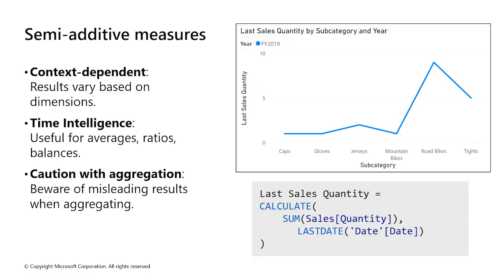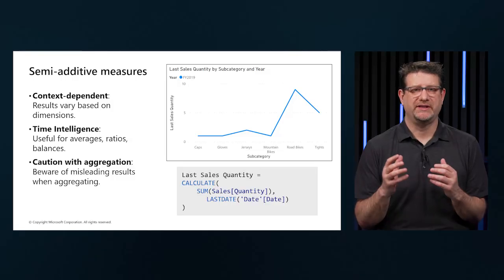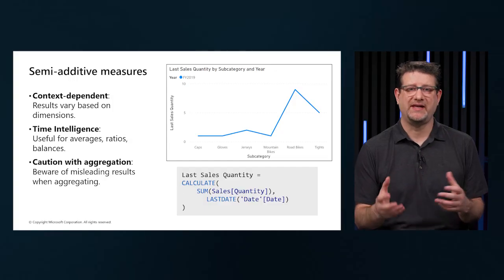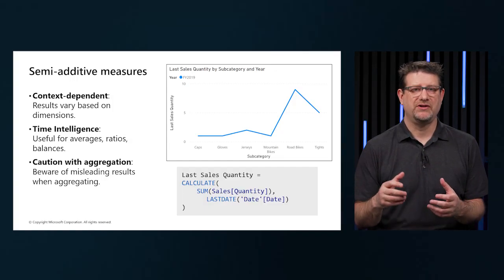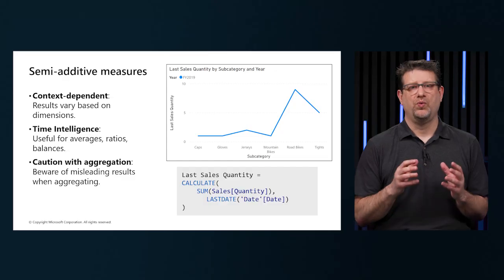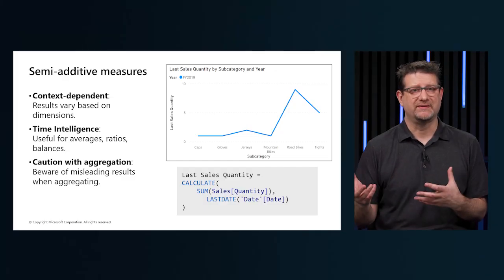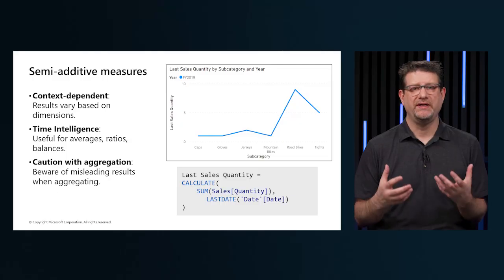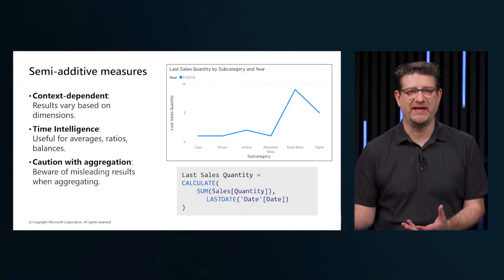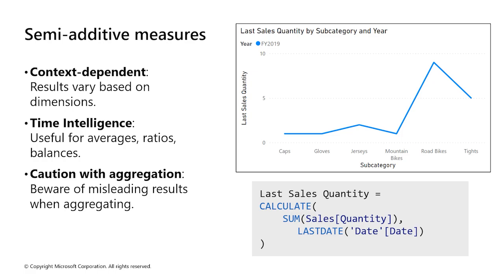Semi-additive measures are a powerful concept in Power BI when standard aggregation methods don't fit the data analysis requirements. Our slide shows a semi-additive measure called 'last sales quantity,' which calculates the quantity of sales for the last date within a selected time period. The line chart shows each subcategory's quantity of sales by the last date in the year. Consider a scenario where we need to analyze inventory or sales data based on a specific point in time rather than aggregating all dates — the last sales quantity measure becomes invaluable.